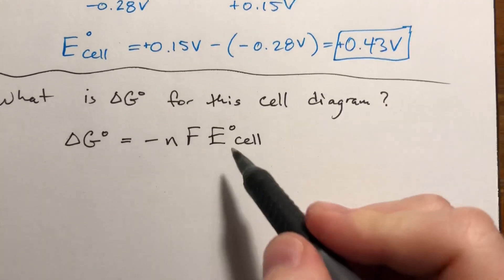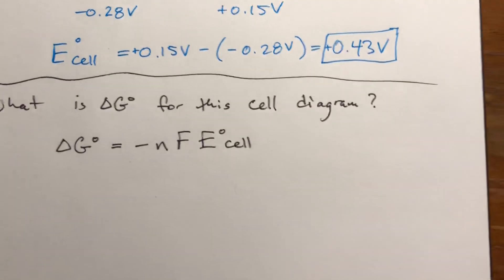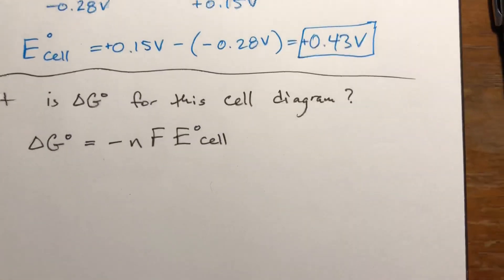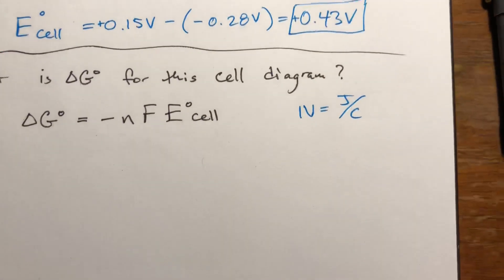E sub cell we just solved for, it's 0.43, and a volt could be visualized as a joule per coulomb.